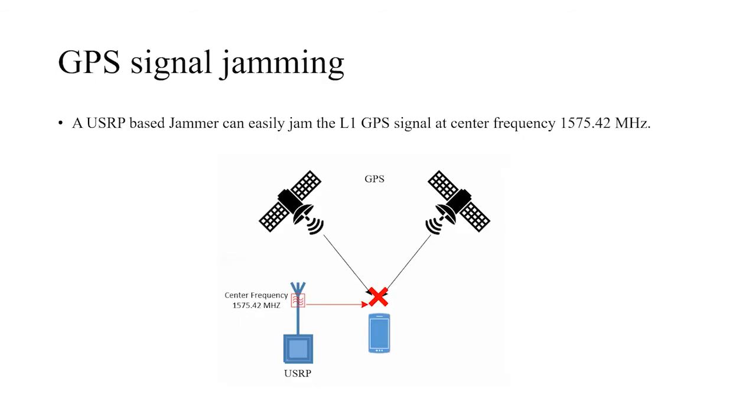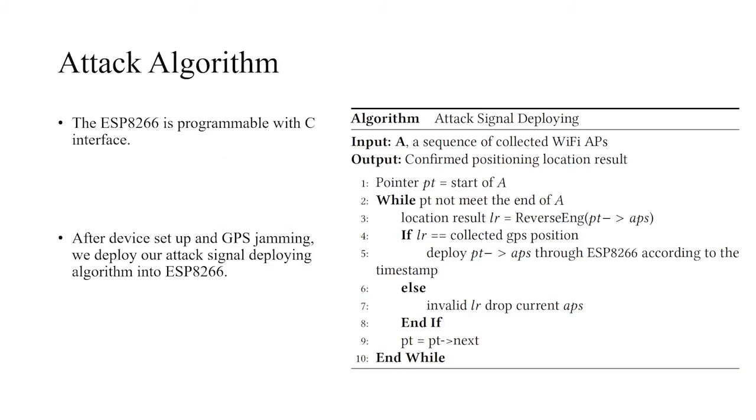The attacker also needs to block the GPS signal, so the attacker uses a USRP-based jammer that can jam the L1 GPS signal at the center frequency shown here. Here is the attack algorithm: first, the attacker will use reverse engineering to verify those attack signals. If it's verified, then the attacker will send out these attack signals.